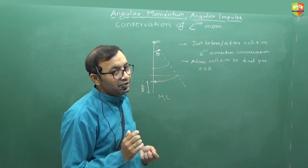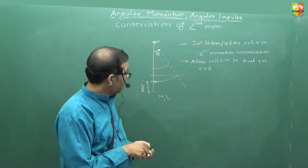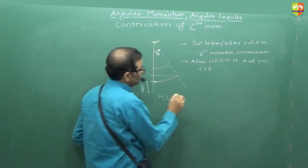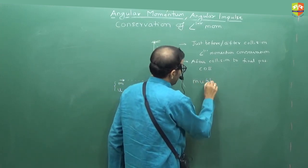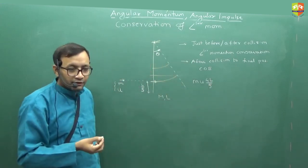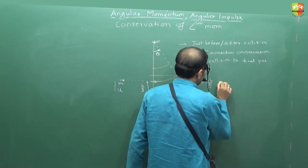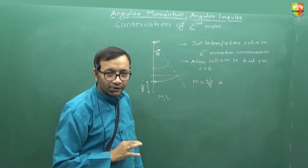What is the initial angular momentum? About this axis, what is the angular momentum of the bullet? M into U into 4L by 5, perpendicular distance. Yes or no? This should be equal to I omega. Initial angular momentum should be equal to the final angular momentum.